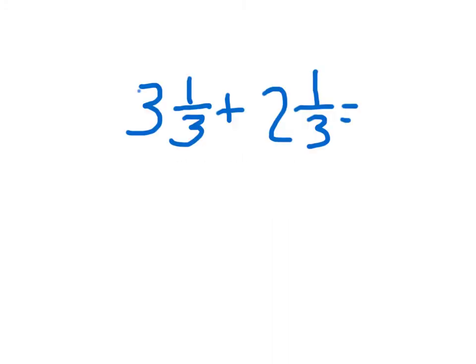Here I'm adding two mixed numbers with like denominators — they both have denominators of three. What we do is add the fractional parts first: one-third plus one-third equals two-thirds. And three wholes plus two wholes equals five wholes. Since there's no regrouping within this lesson, this two-thirds doesn't need to get regrouped.